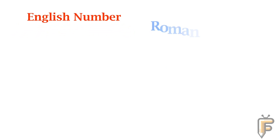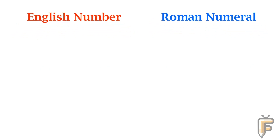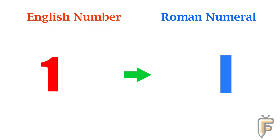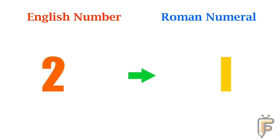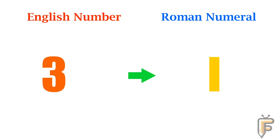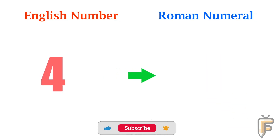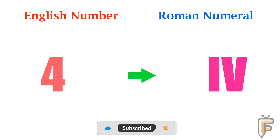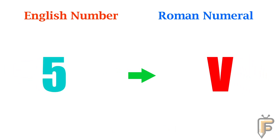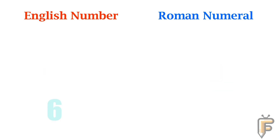English number, Roman numeral: 1 is I, 2 is II, 3 is III, 4 is IV, 5 is V, 6 is VI.